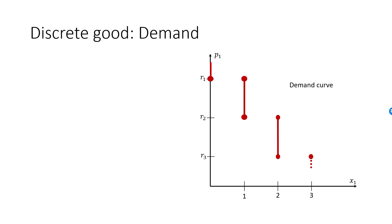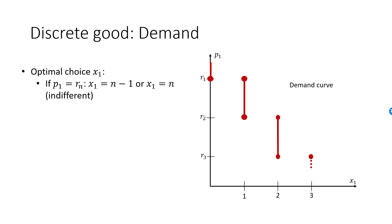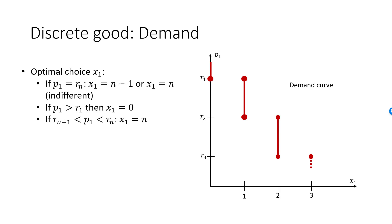We have now traced out parts of the demand curve up to X1 equal to 3. So the following will hold for optimal choice X1. If P1 is equal to R1, then X1 is equal to 0 or 1. If P1 is equal to R2, then X1 is equal to 1 or 2. In general notation, if P1 is equal to Rn for an arbitrary positive integer n, then X1 is equal to n minus 1 or n. If P1 is greater than the largest reservation price R1, then X1 is equal to 0. If P1 is in between R1 and R2, then X1 is 1. If P1 is in between R2 and R3, then X1 is 2. In general notation, if P1 is in between Rn and Rn+1, then X1 is equal to n.